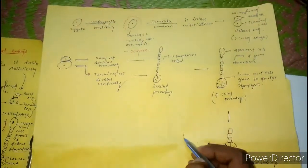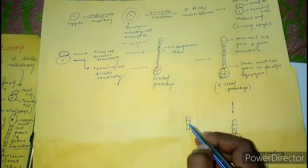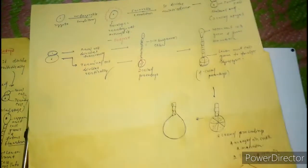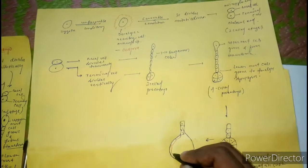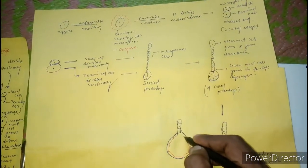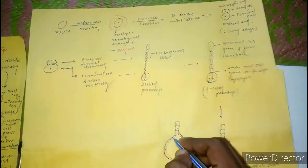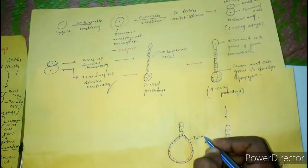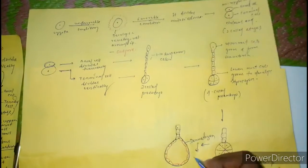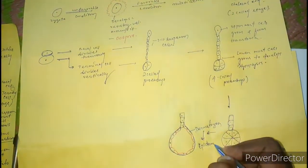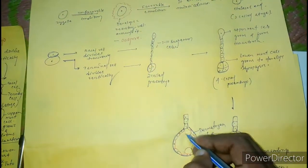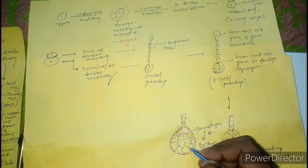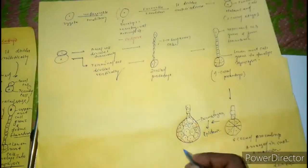After the 4-cell pro-embryo, there will be the formation of a globular pro-embryo. The outermost cells will form the dermatogen layer. This layer is termed as dermatogen and will futurely develop to form the epidermis.